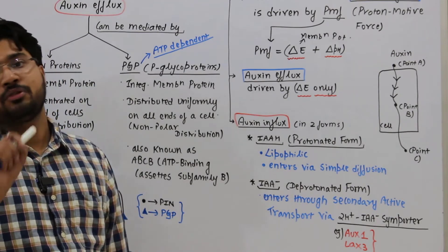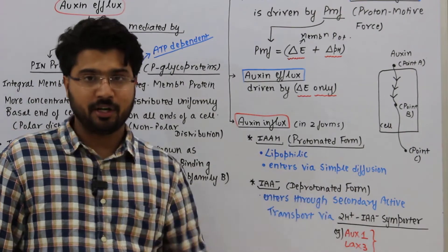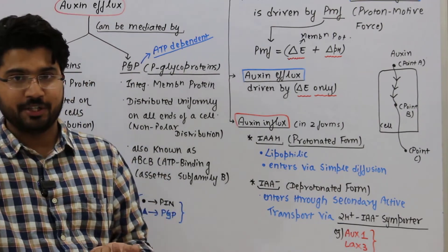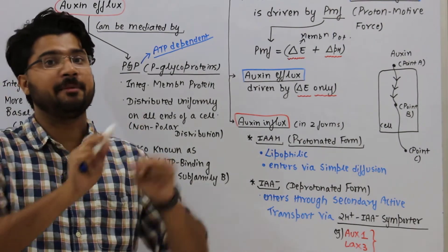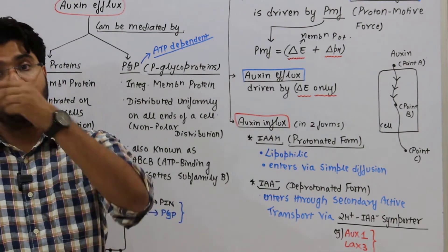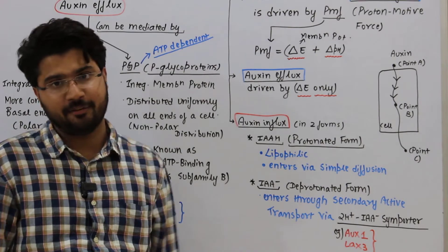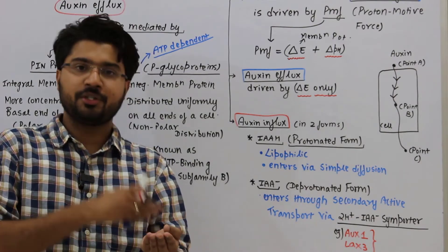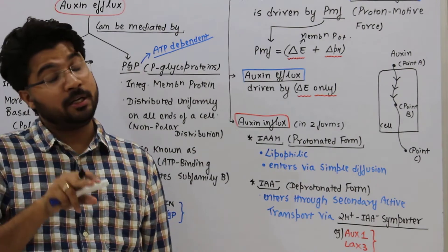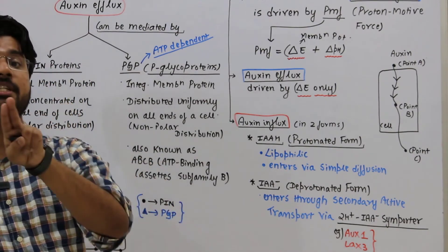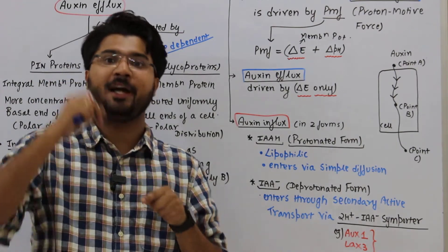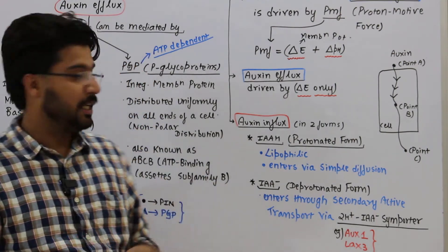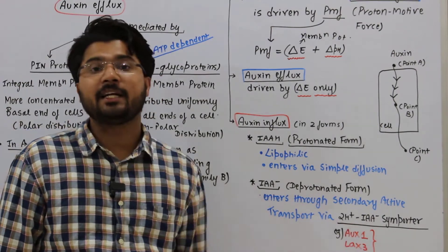The other form is IAA⁻, the deprotonated form. IAA⁻ cannot enter via simple diffusion; it must use secondary active transport. IAA⁻ is transported from low to high concentration, and the energy comes not directly from ATP but from two protons moving from high to low concentration — that is secondary active transport.